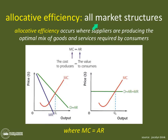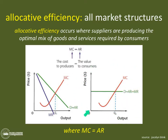We're going to take a look at both the perfect competition price taker's market and the price maker's market, which of course is monopoly, oligopoly, and monopolistic competition. Let's first take a look over here. This is a diagram of allocative efficiency in perfect competition.